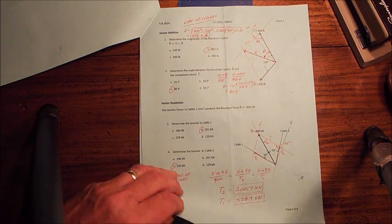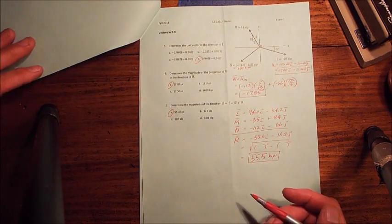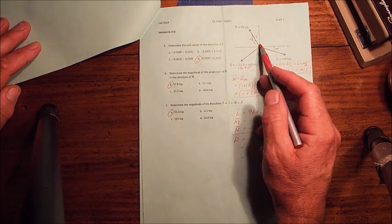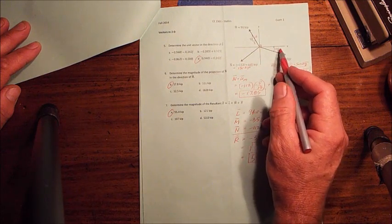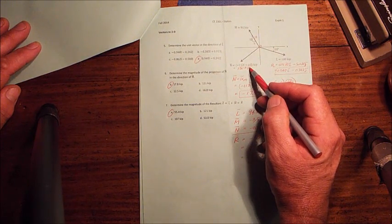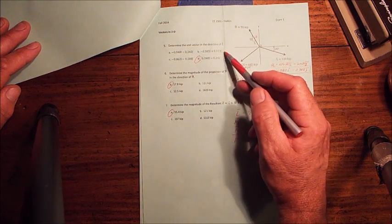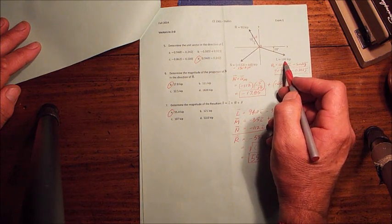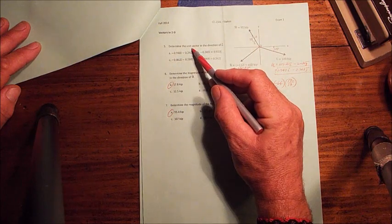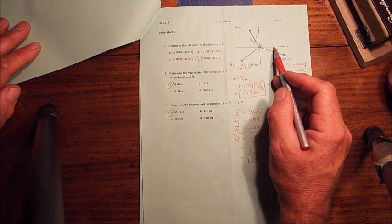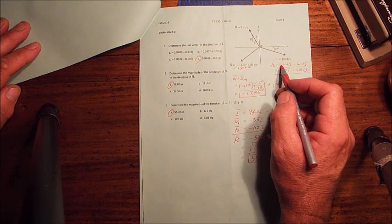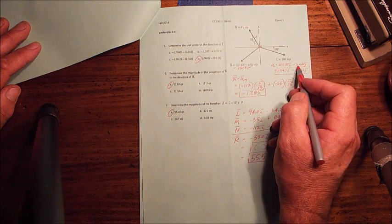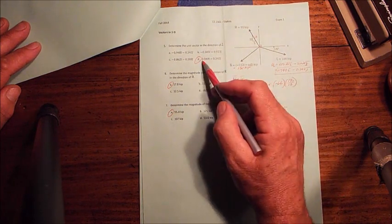Now we need to go to page two. This was a 2D vector problem where I've got three vectors given in different ways. This is a slope, this is an angle to a reference axis, and this one's given straight in Cartesians. The first one I want to know is the unit vector in the direction of L. The direction is 20 degrees from the x-axis, so the x component is the cosine of 20, the y component is the sine of 20. Here's the numbers, answer D.